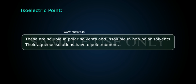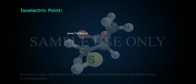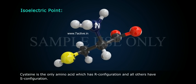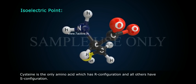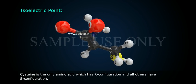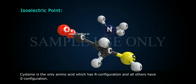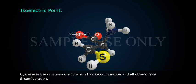Amino acids are soluble in polar solvents and insoluble in non-polar solvents. Their aqueous solutions have dipole moments. Cysteine is the only amino acid which has R configuration; all others have S configuration.